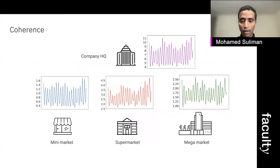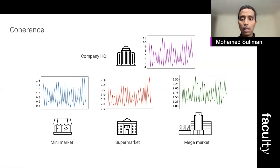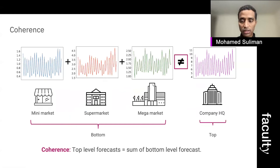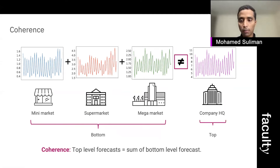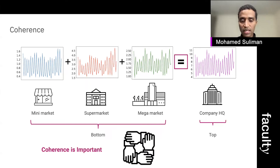Another important concept within hierarchical forecasting is coherence. Each department will be independently doing its own forecasting — the mini supermarket will forecast future sales, while the company headquarter will also do its own forecasting. What is really important is that the sum of the forecasting at the bottom level must be exactly equal to the forecasting at the top level. If that is not the case, we will have a misalignment causing business losses, so coherence is very important within hierarchical forecasting.